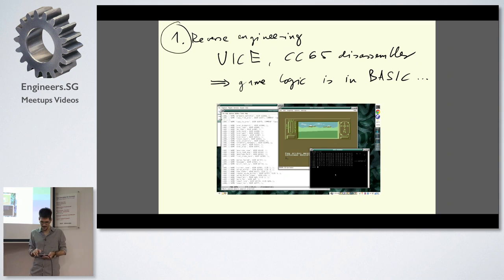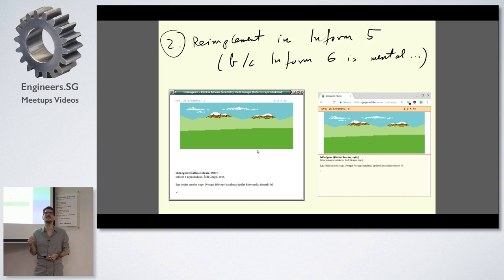I re-implemented that in a modern text adventure language called Inform. I used Inform 5 because version 6 is insane. After you compile it, you get something which runs in a VM. There are player applications for that VM, so you could download a player, load my remade version of this old game into it and play, and this could be the end of the story.